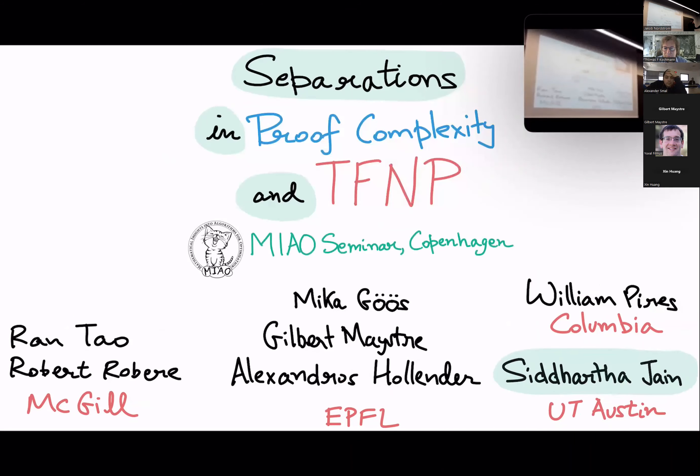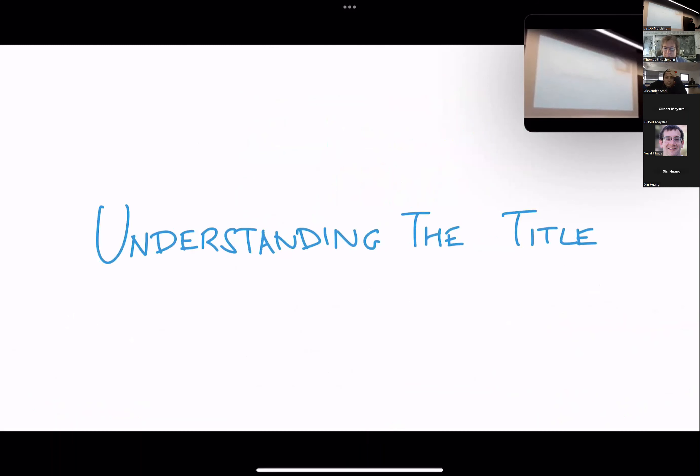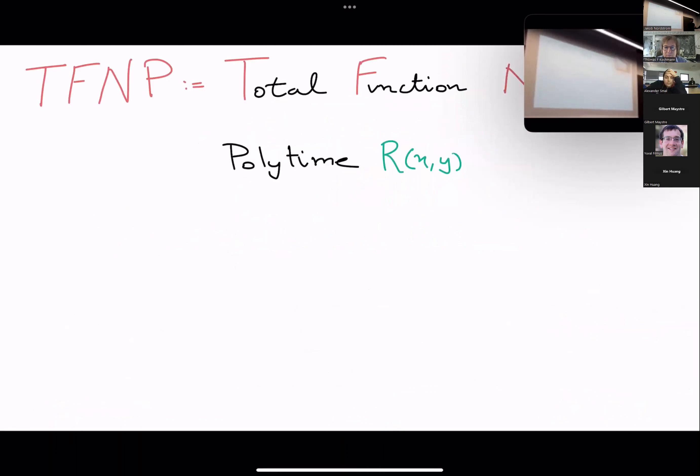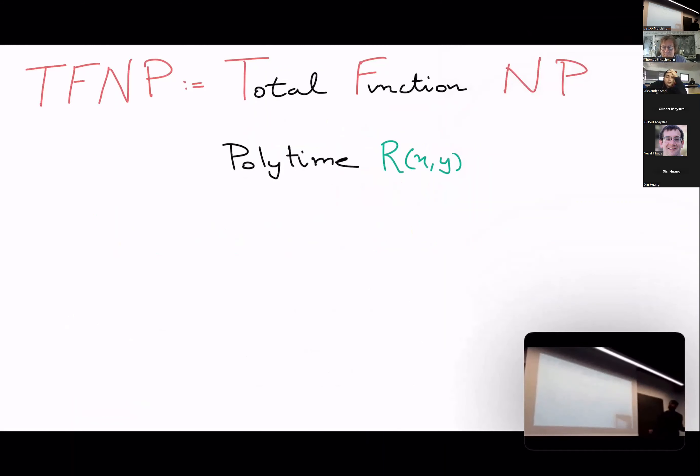So the start of this talk are these two entities, one of which I presume you know well. Let's understand the other first. What does TFNP stand for? TFNP stands for total function NP.